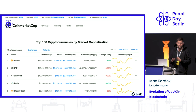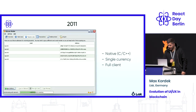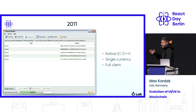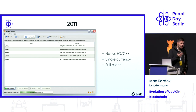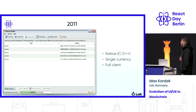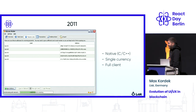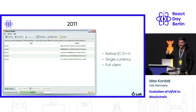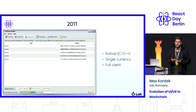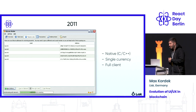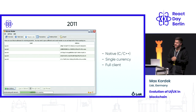It all started in 2011 with Bitcoin. Here we see the original Bitcoin wallet developed by the original team. It's native in C++ using the QT framework, and it's beautiful. But as you can probably see, it's not really a user interface normal people can interact with — you have to download over 100 gigabytes of blockchain data, and it's just for Bitcoin. You have to install something; it's not really nice.